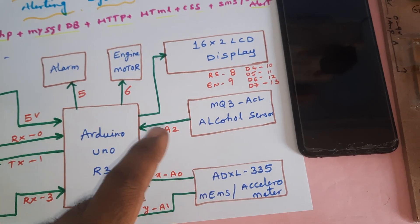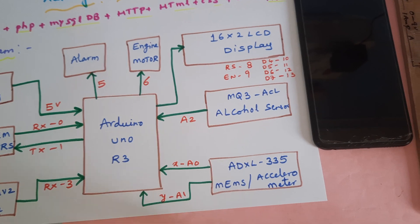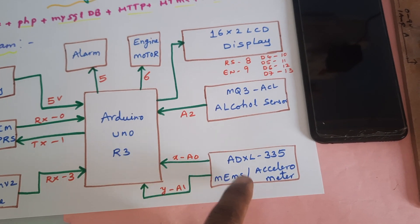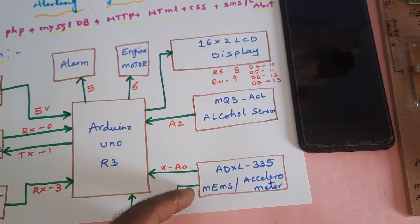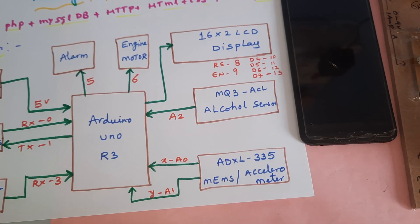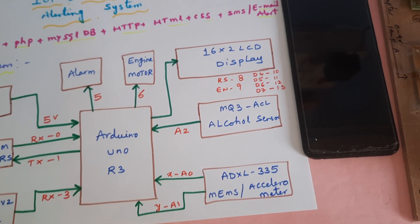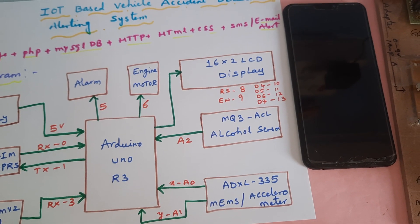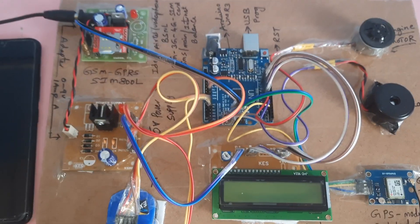Whenever any accident is detected, it will send the data via SMS alert and email alert, and also update the data onto the server.